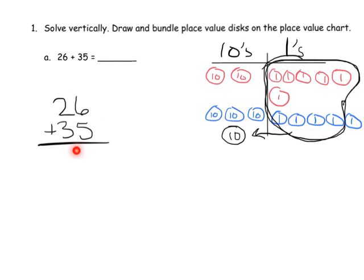Over on the standard algorithm: six plus five is eleven, meaning we can bundle an extra ten and we have one left over. We write the 1 in the ones place and carry a 1 to the tens place. Now we have two plus three plus one, which is two tens plus three tens plus one more ten, giving us six tens. So our answer is 61.